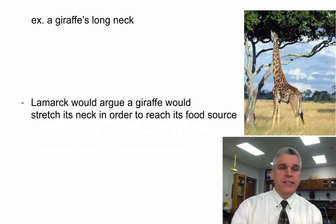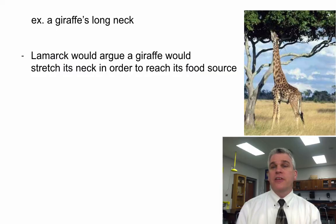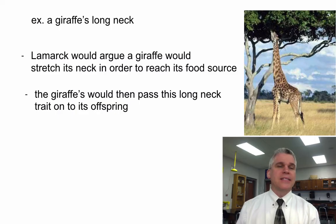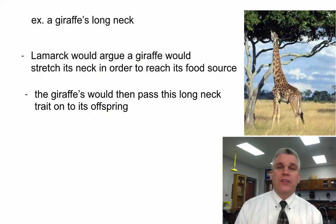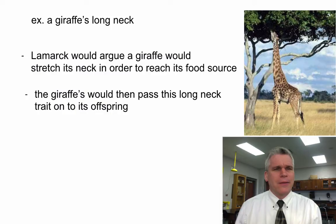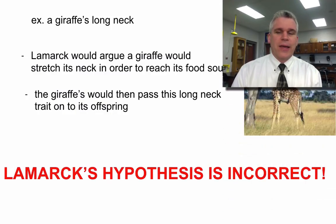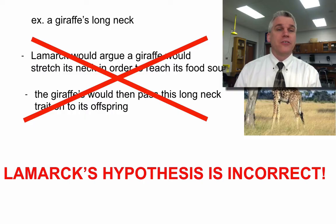Let me give you an example of what Lamarck was saying. He explained why giraffes have long necks. He said that the giraffe would have to stretch higher up into the trees in order to reach its food source. So the more it stretched, the longer its neck got. And then because it had a long neck, it was able to pass that same trait on to its offspring — which is kind of ridiculous. It's not like if I go start lifting weights and I'm bench pressing 300 pounds, that when I have a child they'll be able to bench press 300 pounds as well. So we know that Lamarck's hypothesis is not right. But what it did do is got Darwin thinking about this idea of traits being passed on from parent to offspring.